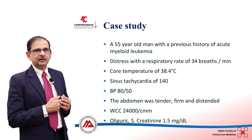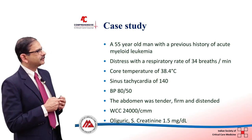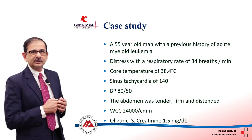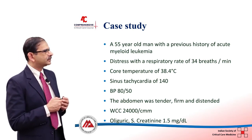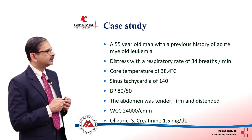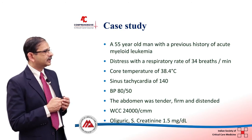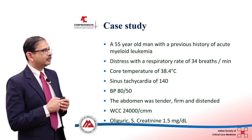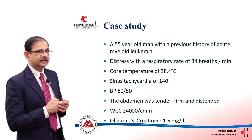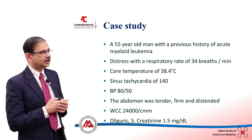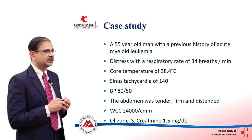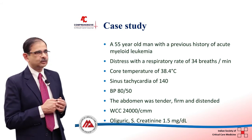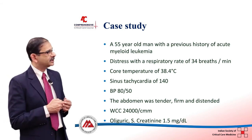We'll start off with a case. This is a 55-year-old man with a previous history of leukemia who comes in with respiratory distress. His respiratory rate is 34 per minute, he's severely febrile, and has a tachycardia of 140 beats per minute. His blood pressure is low. His abdomen is tender, firm and distended. His white cell count is raised to 24,000. He's oliguric and his serum creatinine is 1.5 milligrams per deciliter.